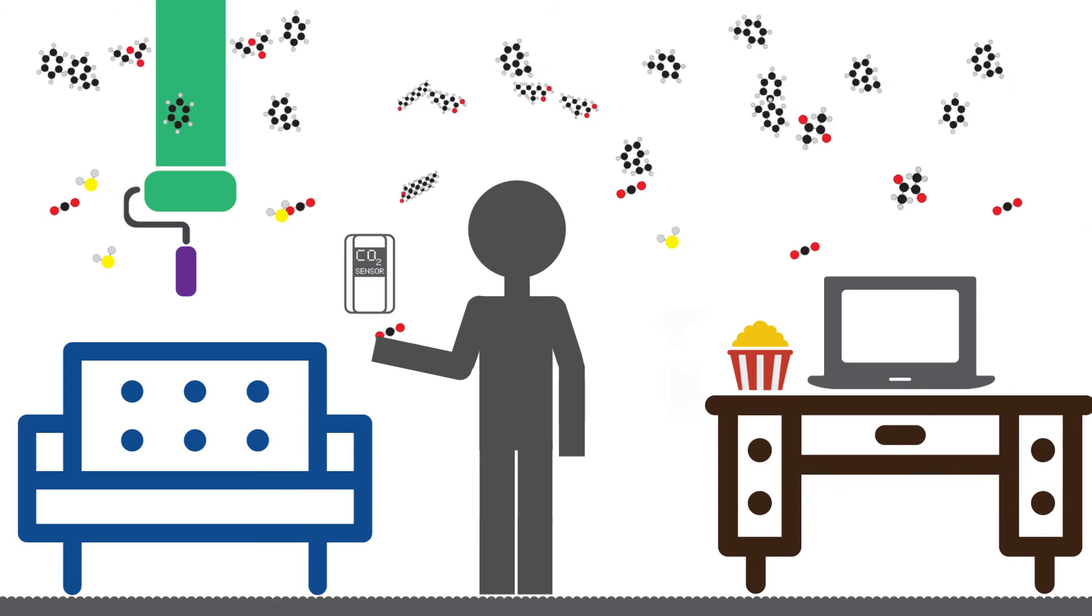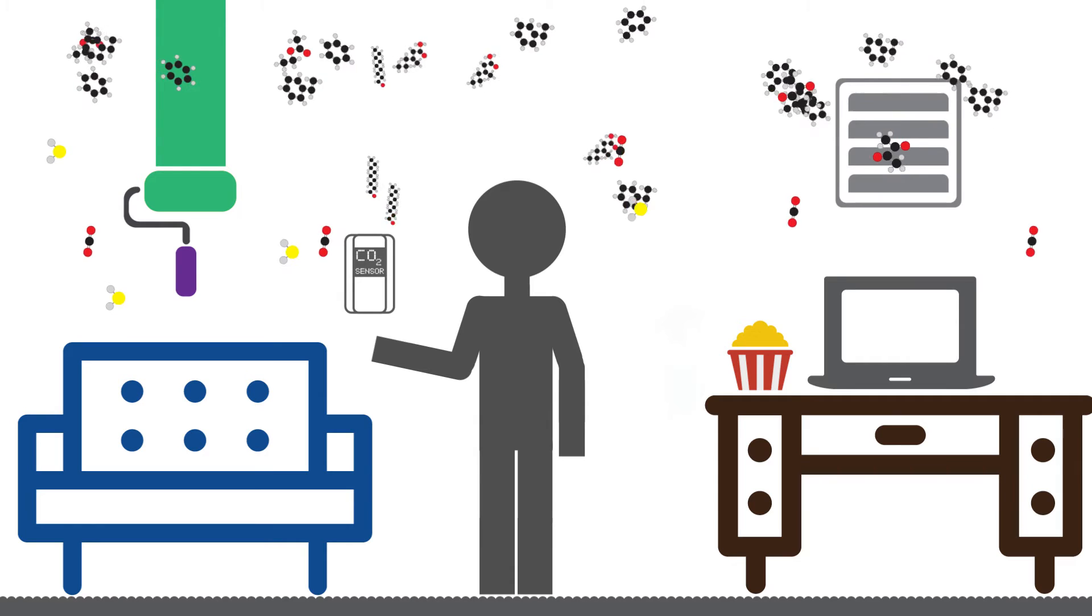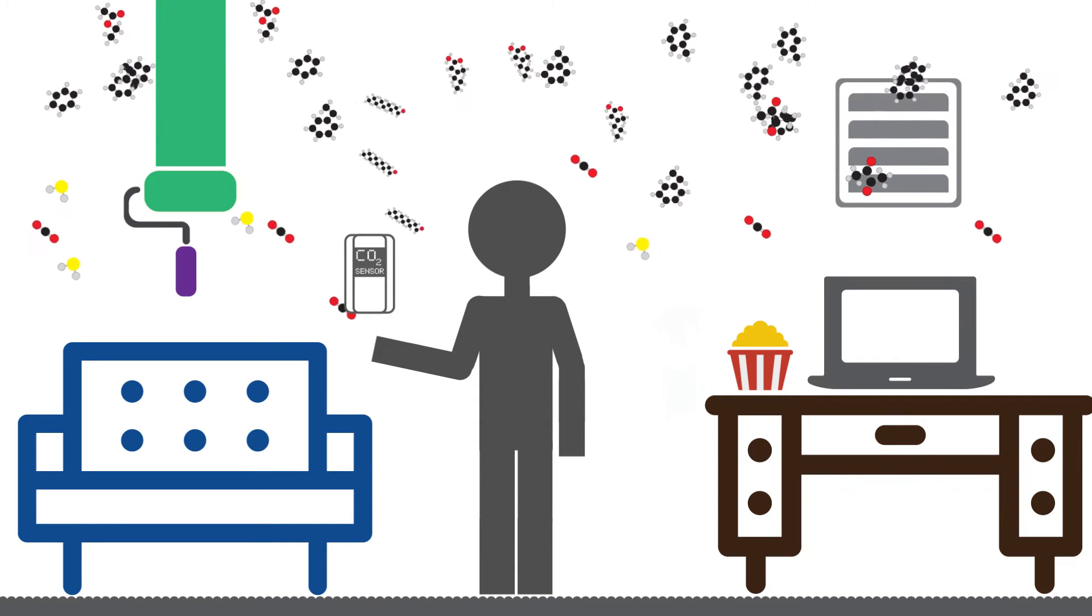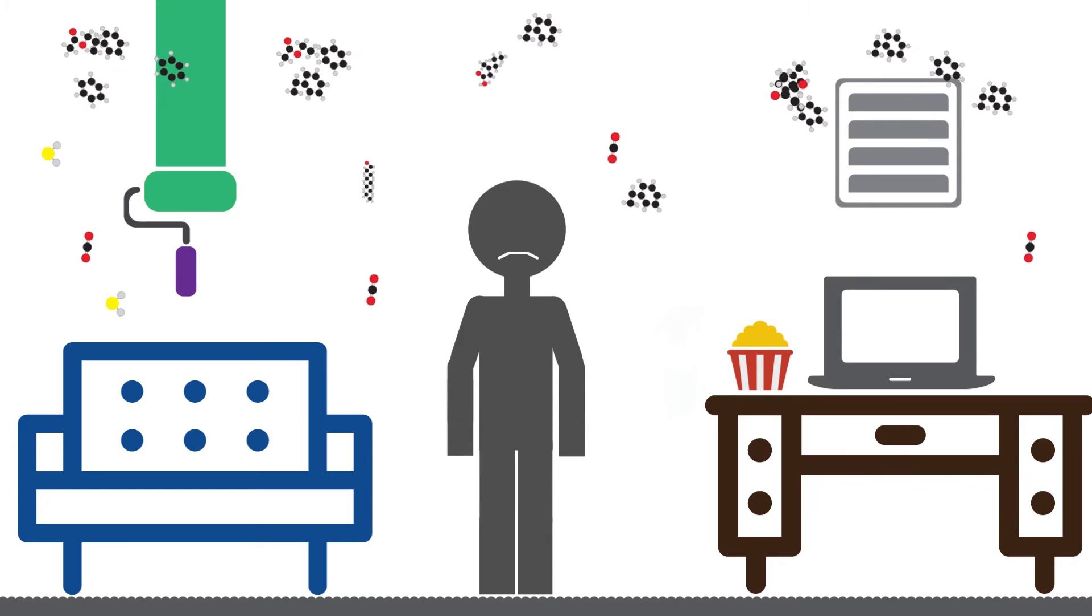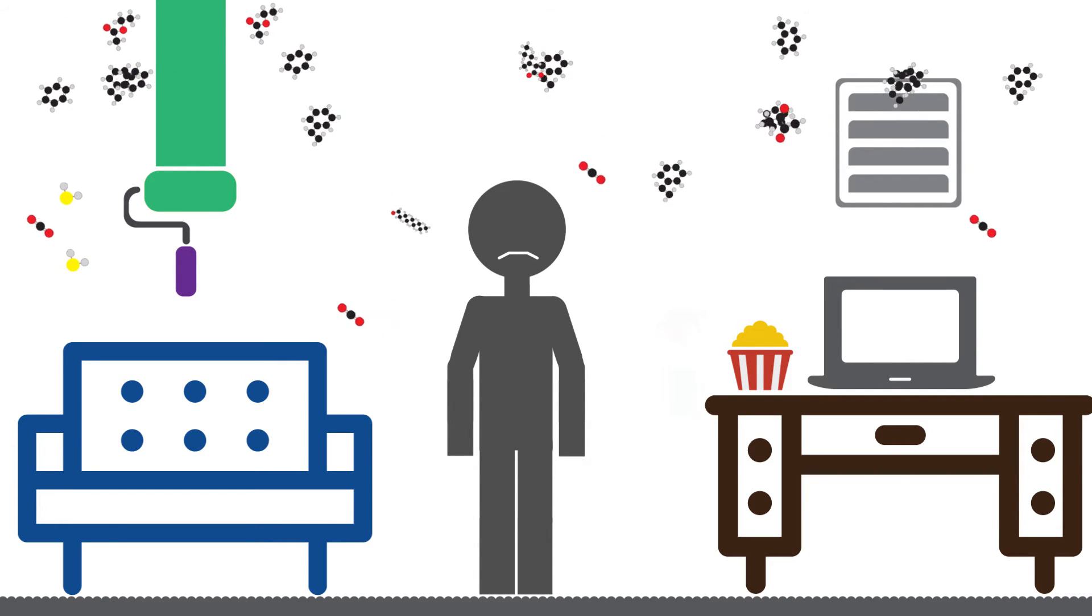When more VOCs are being produced than CO2, the ventilation indicated by the CO2 sensor isn't enough to reduce the VOCs to an appropriate level. This can negatively affect health and productivity.